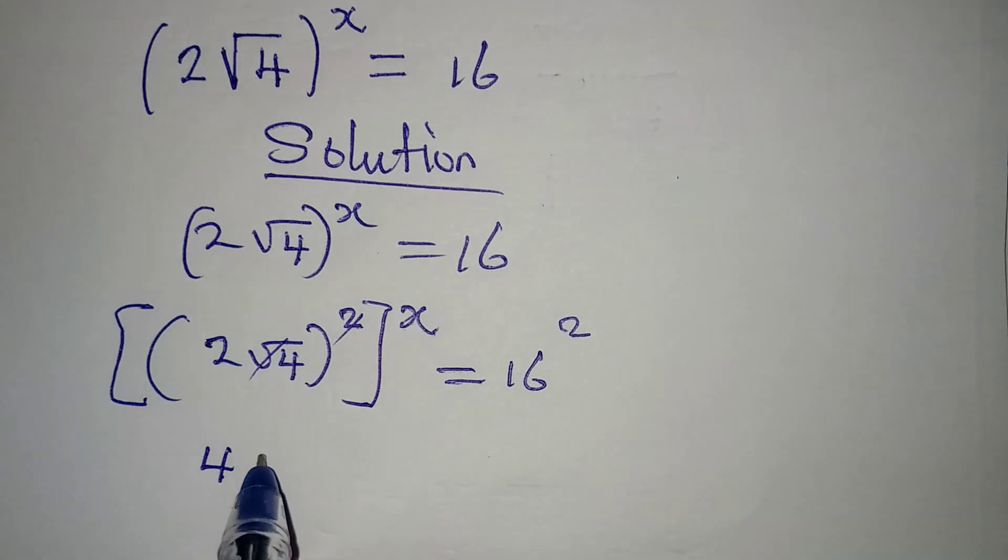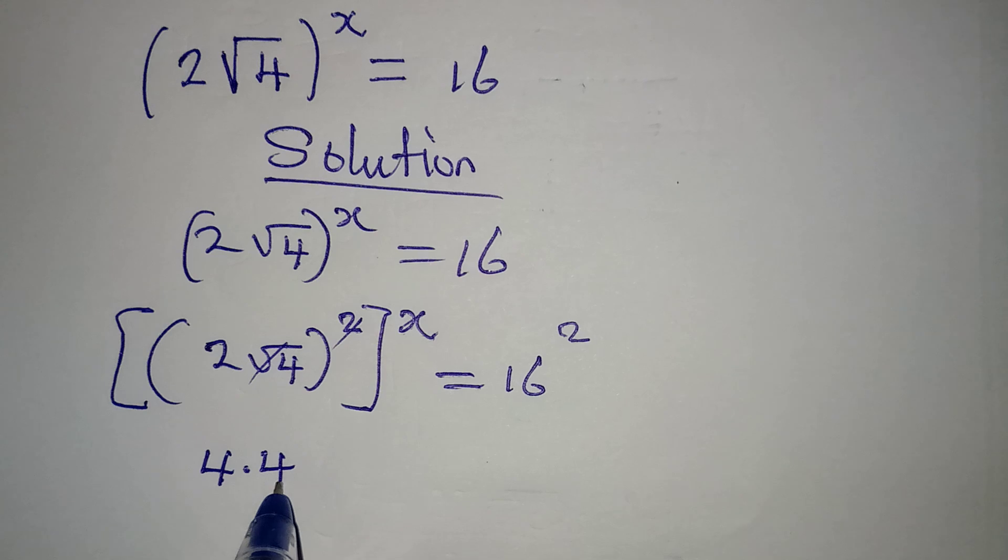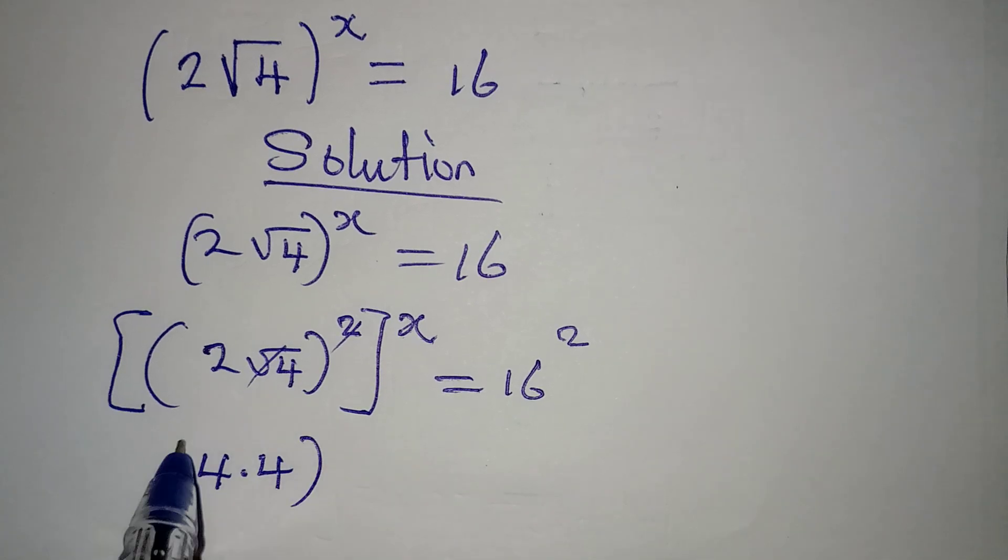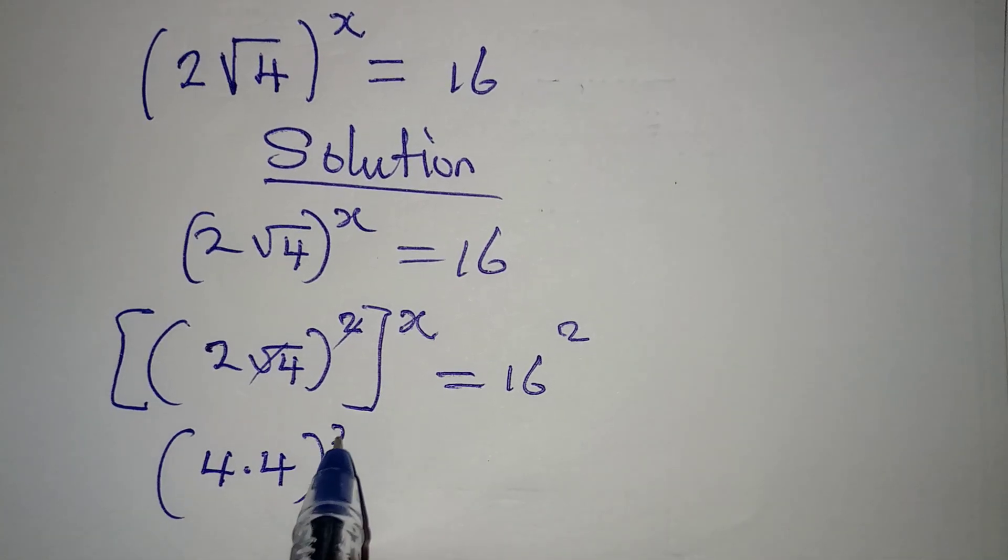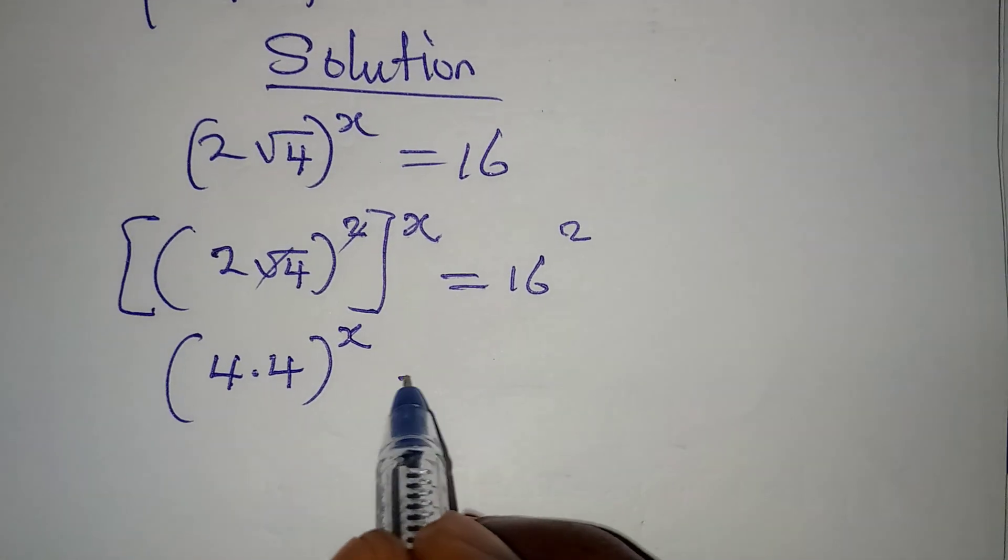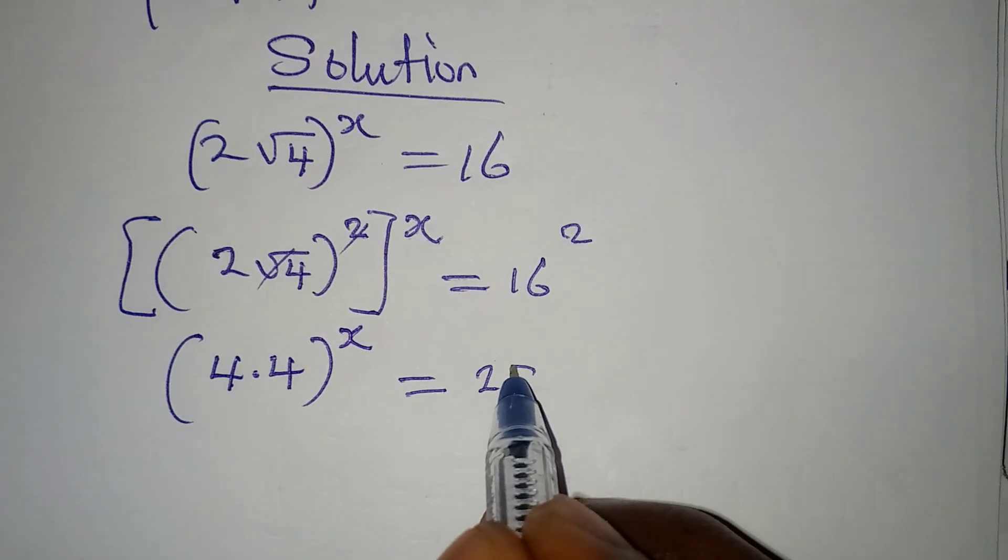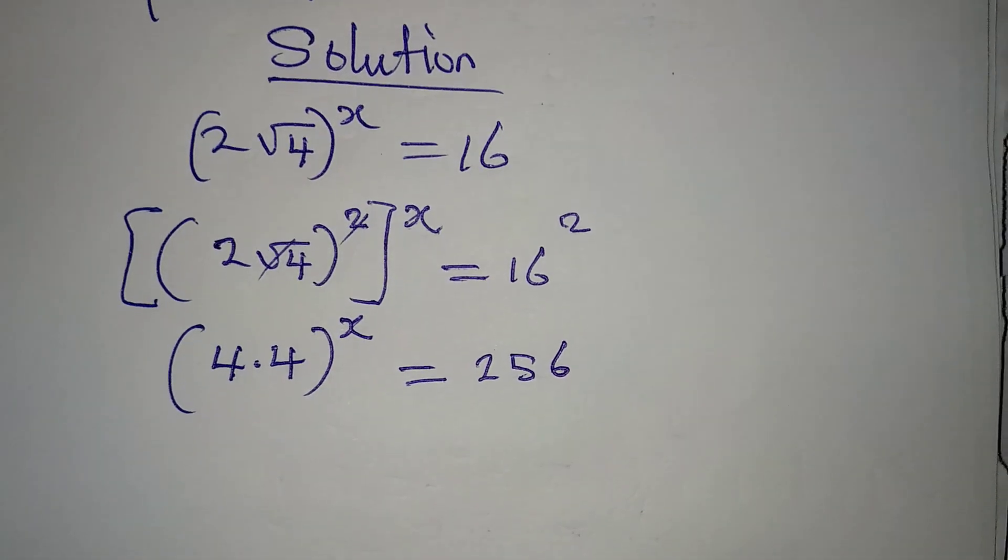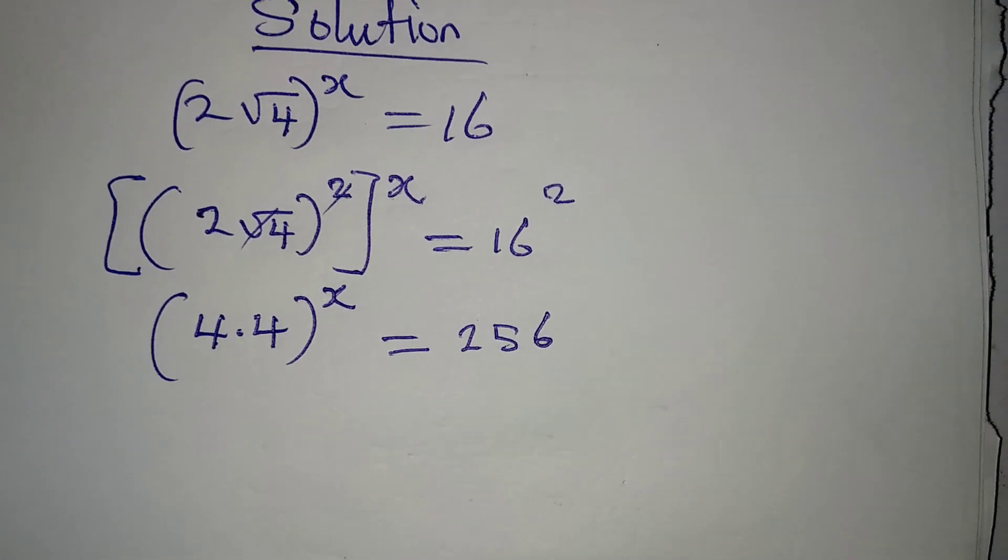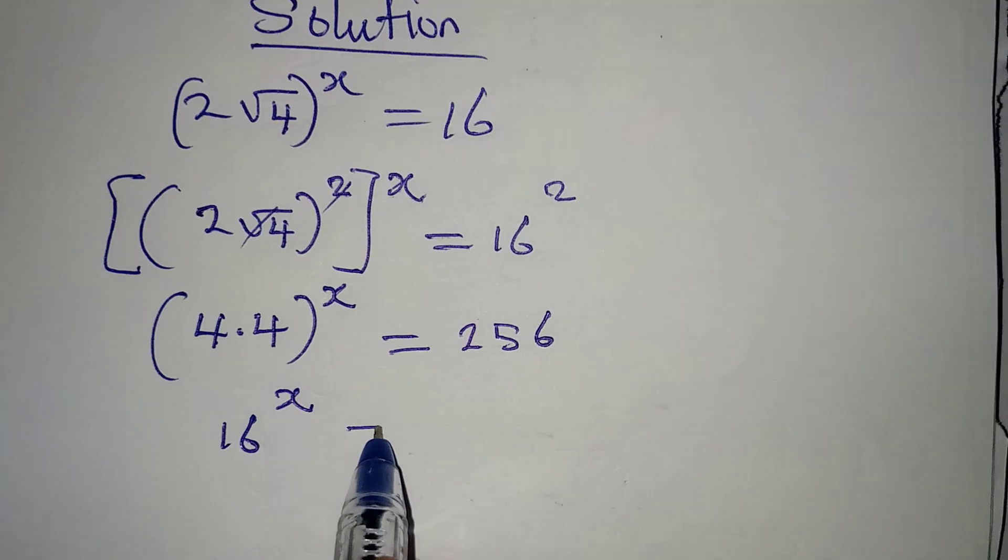This can now clear this so we have multiply by 4 again, and then everything here will be raised to the power of x. Everything to the power of x, which will be equal to 16 squared, which will give us 256.